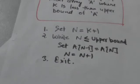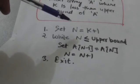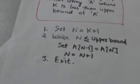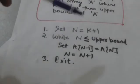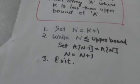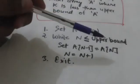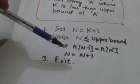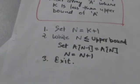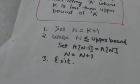In this algorithm, first the value of k+1 is assigned to a variable n. Then while n is less than or equal to upper bound, two steps will be repeated. In the first step, the value of element A[n] is assigned to A[n-1]. In the second step, the value of n is increased by 1. After increasing n by 1, the condition is checked whether n is less than or equal to upper bound or n is greater than upper bound.